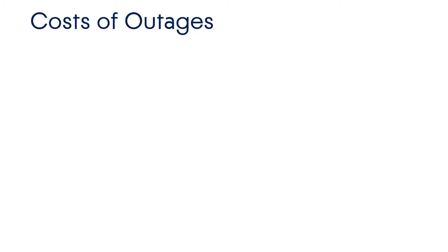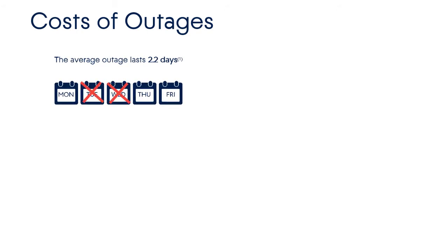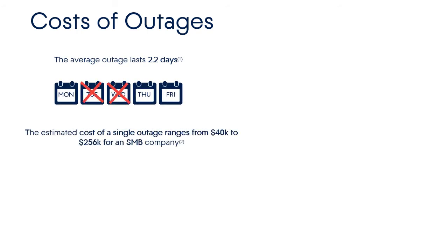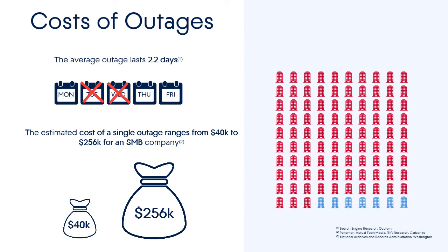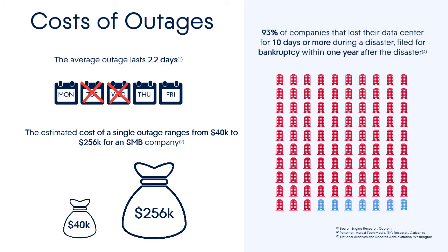According to search engine research and Actual Tech Media portals, the average outage lasts 2.2 days and can cost a small or medium-sized business from $40,000 to $256,000. Moreover, according to recent published reports by the National Archives and Records Administration in Washington, 93% of companies who have lost their data center for 10 days or more during a disaster file for bankruptcy within one year after the disaster.